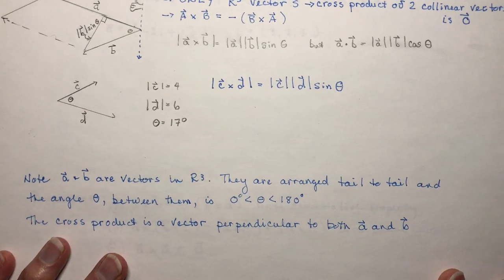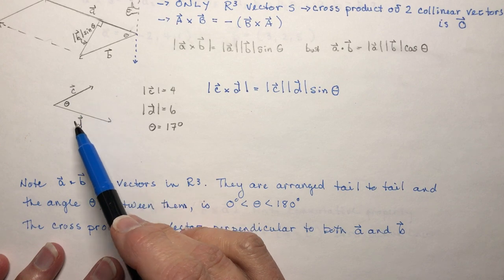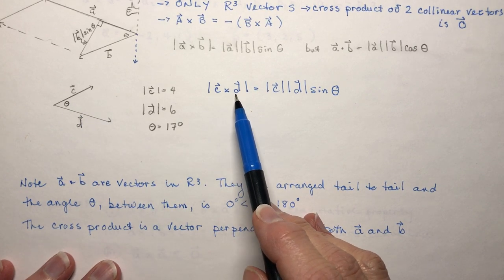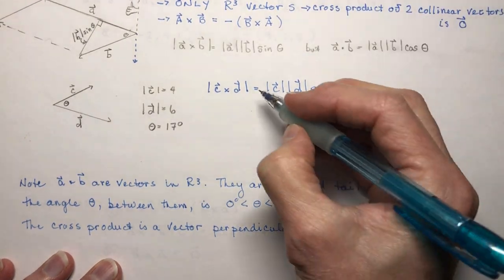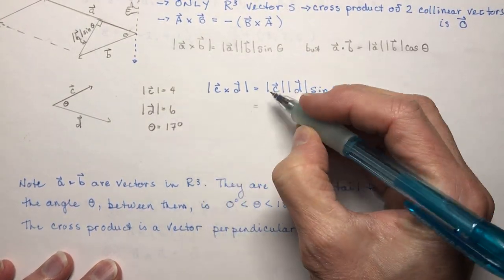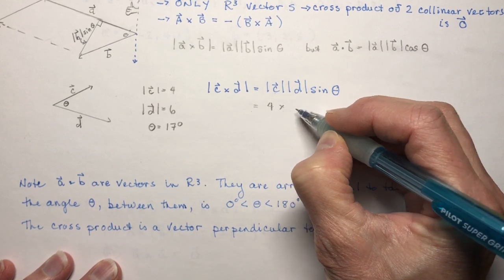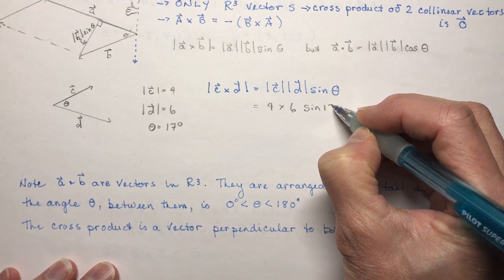So let's go back to a little example here so if I asked you if I gave you this information here about c and d and you're trying to do c crossed d the magnitude of it so we're finding the area of the parallelogram we would say the magnitude of c well it's already given here it's a pretty simple question it gives you four and the magnitude of d is six all times the sine of 17 degrees.